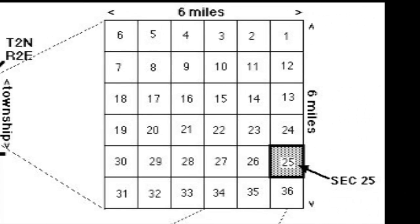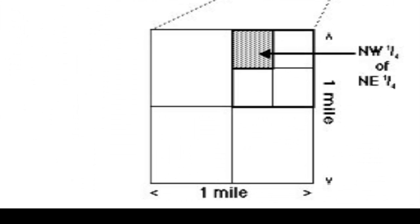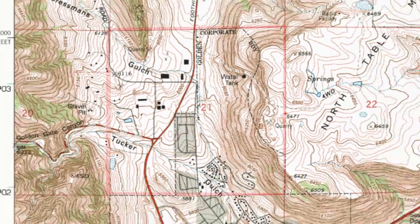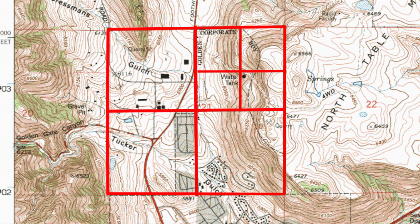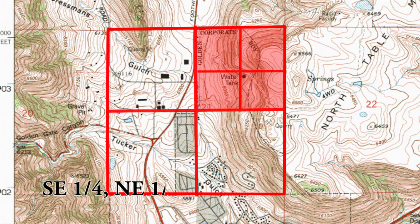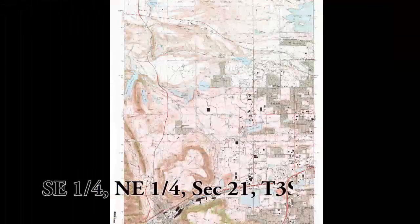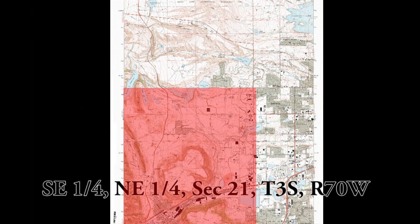But this still isn't specific enough, so we take this section and split it into quarters. Our water tank is clearly in the northeast quarter of section 21, Township 3 South, Range 70 West. Not specific enough yet, so we break this quarter of a section into quarters — or sixteenths of a section. Our water tank is barely in the southeast quarter of the northeast quarter of section 21, Township 3 South, Range 70 West, and we're done.